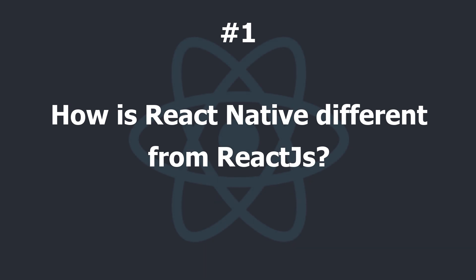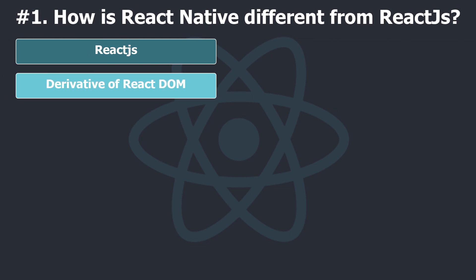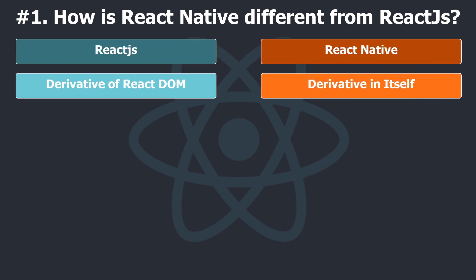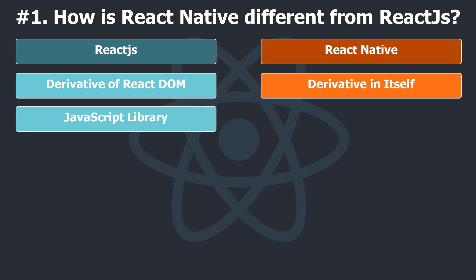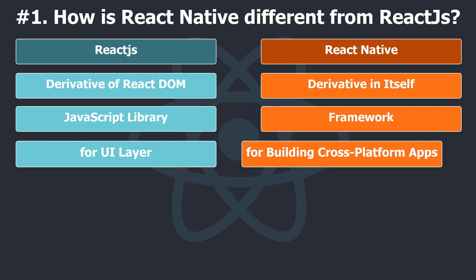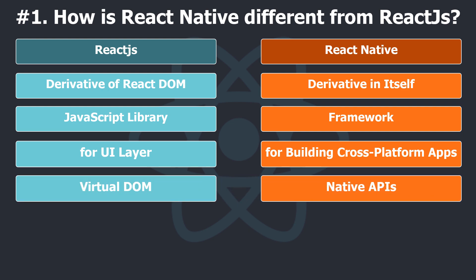How is React Native different from React.js? React.js can be described as a base derivative of React DOM for the web platform, while React Native is a base derivative in itself, which means that the syntax and workflow remain the same, but components alter. React.js is a JavaScript library which enables the programmer to create an engaging and high-performing UI layer, while React Native is an entire framework for building cross-platform apps, be it web, iOS, or Android. In React.js, Virtual DOM is used to render browser code, while in React Native, native APIs are used to render components in mobile.